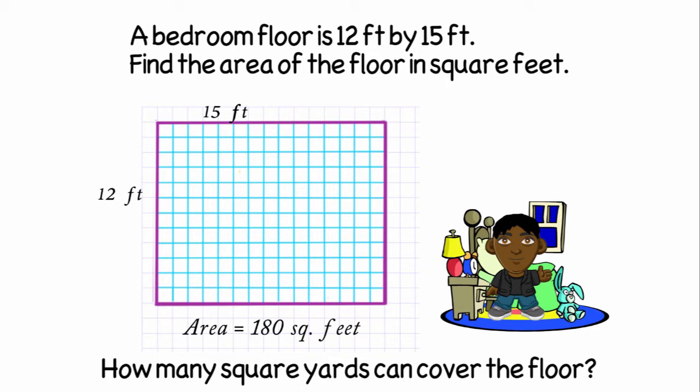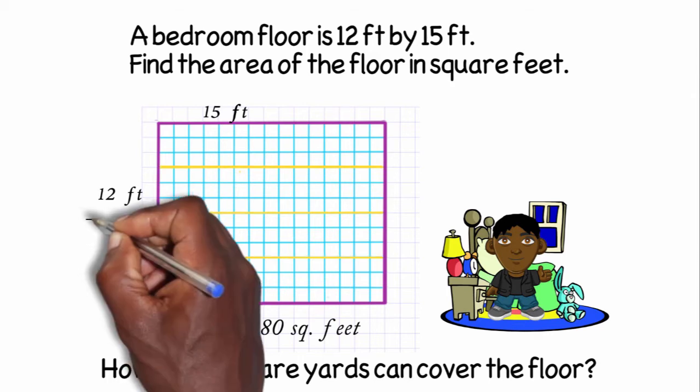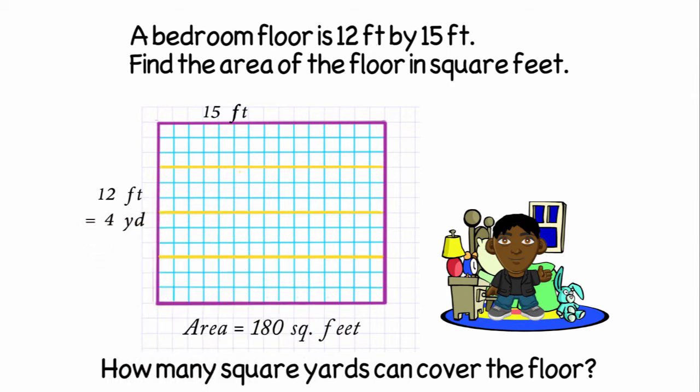And I'll do that by using the fact that it takes three feet to equal one yard. So I'm going to take the length of my room, which is 12 feet, and I'm going to divide it into groups of three. And I notice I can get four yards out of that because 12 divided by three is four.